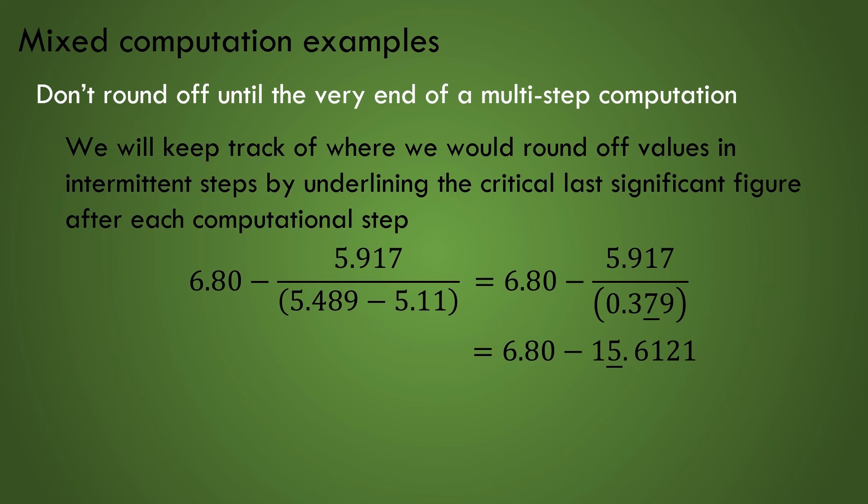We finish up with the final subtraction obtaining the number. The least precise quantity in this subtraction is the 15.6121 value where the 5 is underlined, reminding us that we can only measure this value to the 1's position, and thus we must underline the first 8 in the final result. Finally, it's time to round off, so we round up, obtaining the result minus 9, or better still, minus 9 times 10 to the 0, to stay clear of any ambiguity in the sig figs.